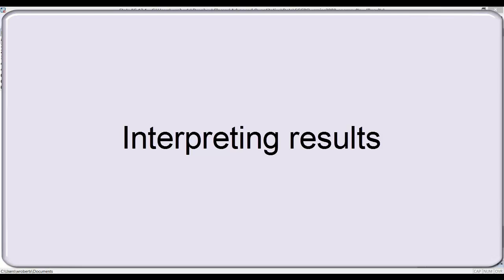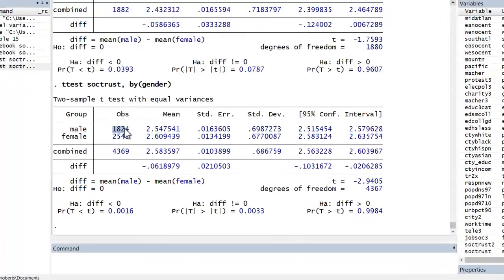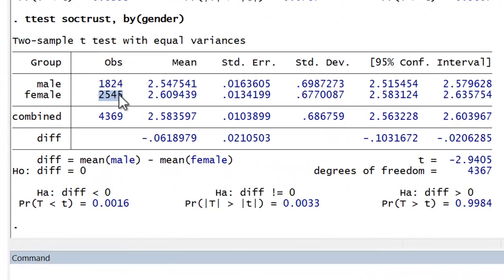In this video, I want to show you how we can interpret the output from a two-group mean comparison t-test. Here's the number of observations or respondents who are male, the number of female, and the total sample.